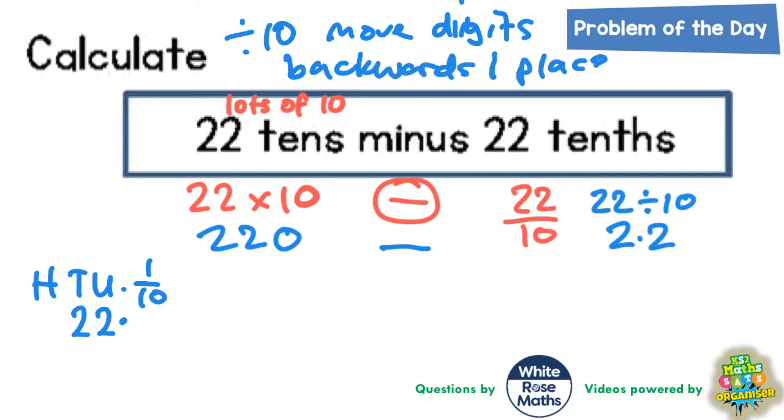And that's because the place value of all the digits becomes 10 times smaller because you're dividing by 10. So, this 2 would go into the tenths column. And the 2 in the tens column would go into the units column if everything moves backwards one space. So, 22 becomes 2.2.